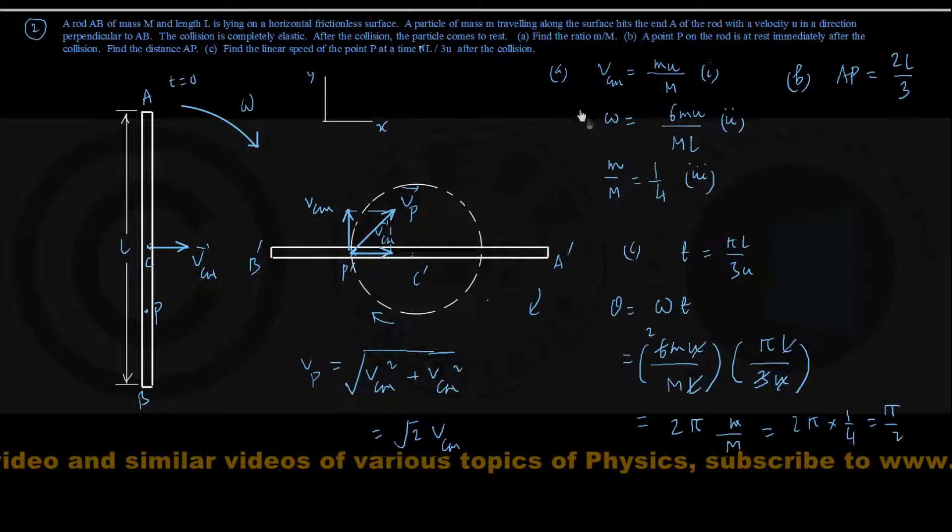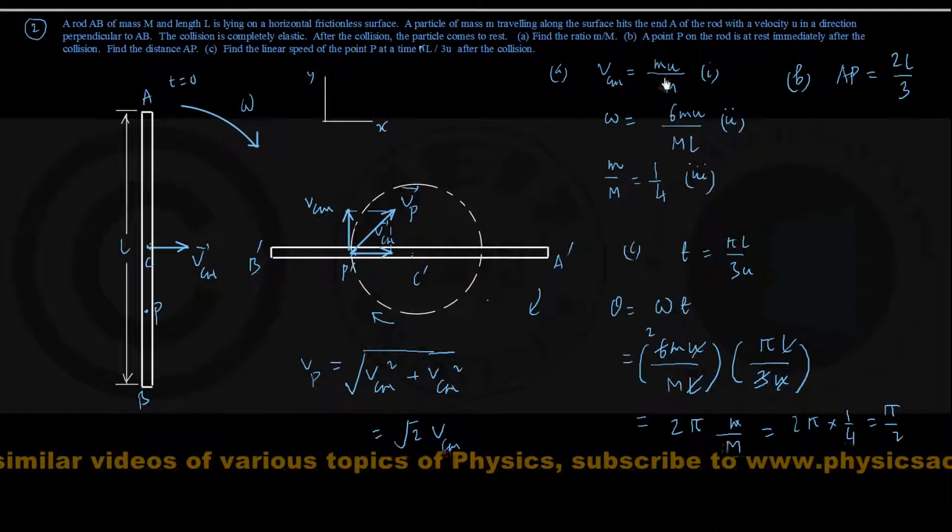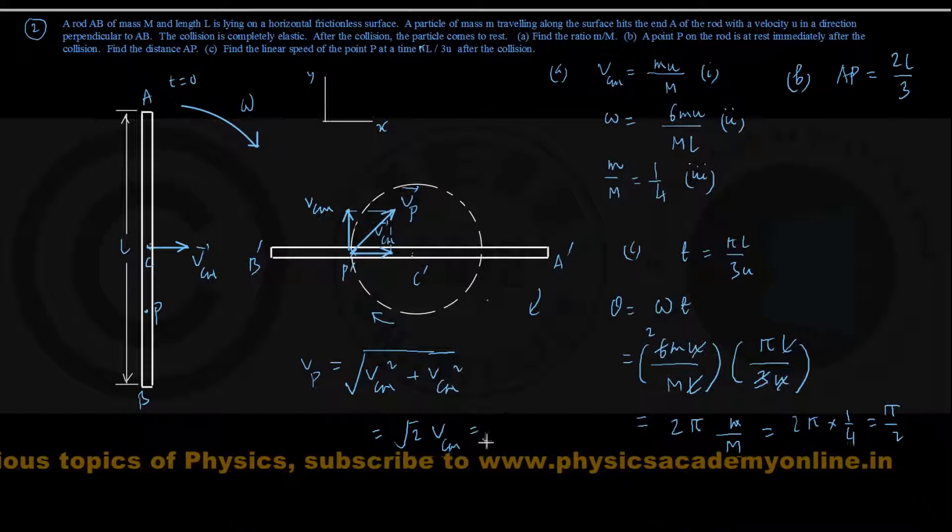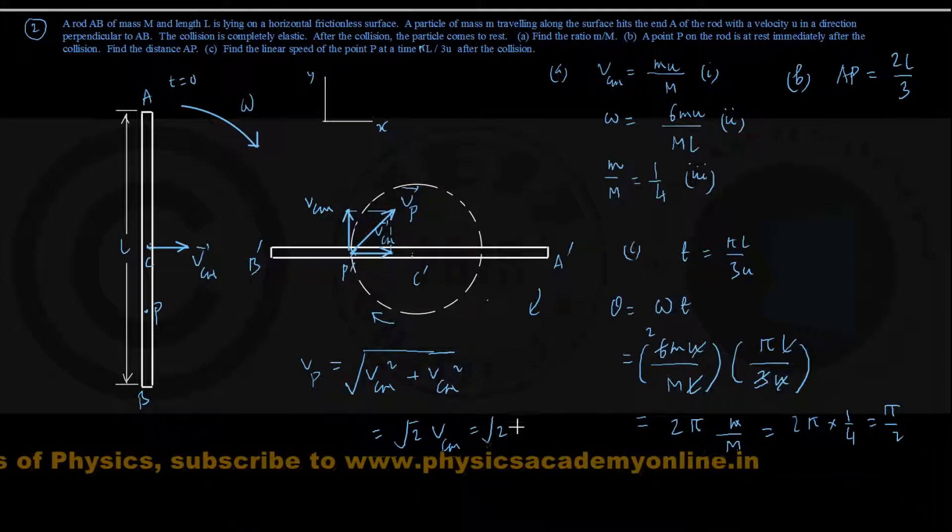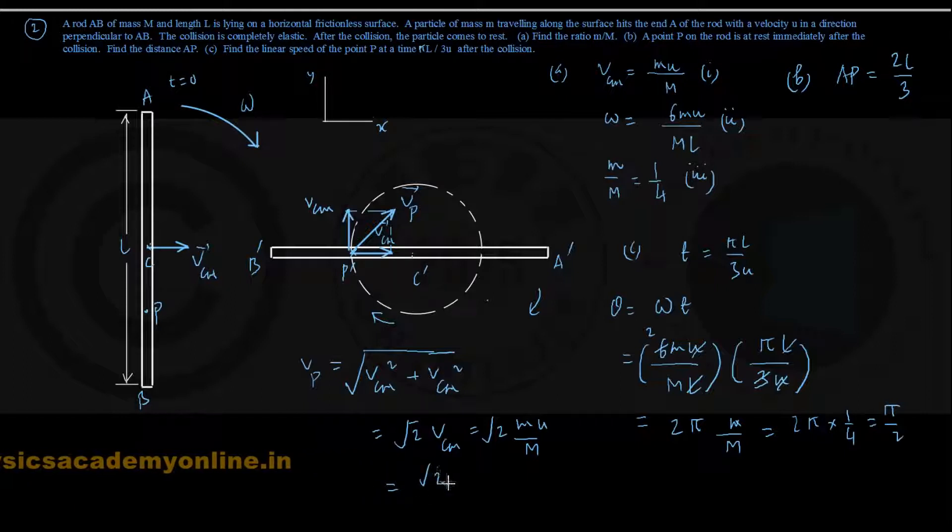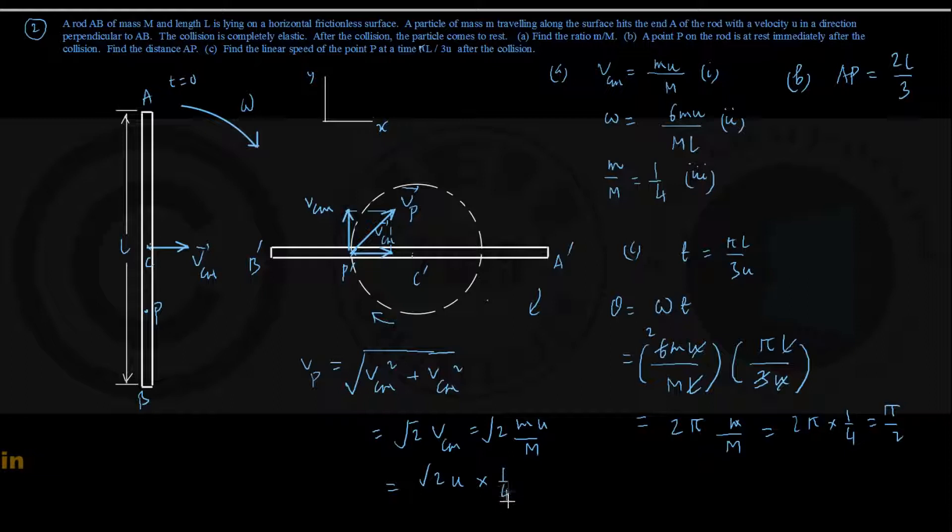We need the results of part A again and again. VCM was found to be mu by M. So I put the value here, square root of 2 into m into U by capital M. This is giving me root 2 into U, small m by capital M is 1 upon 4 given.